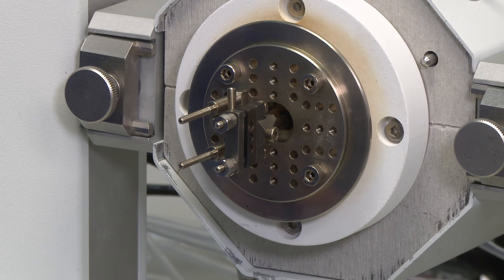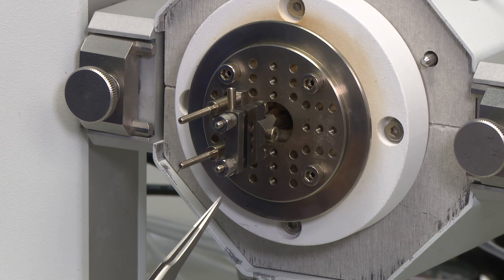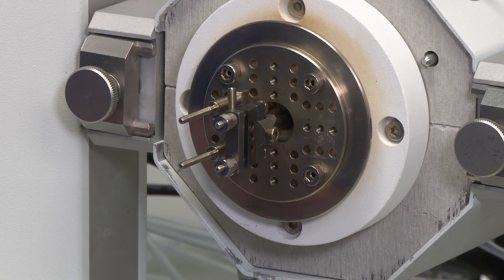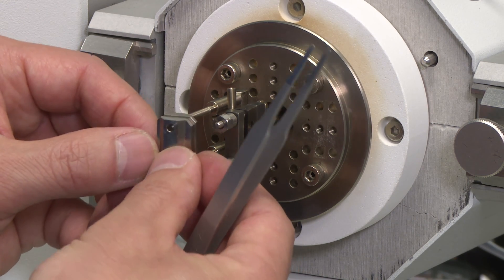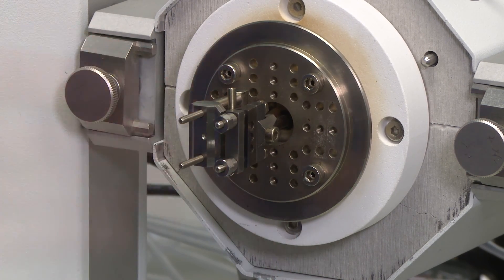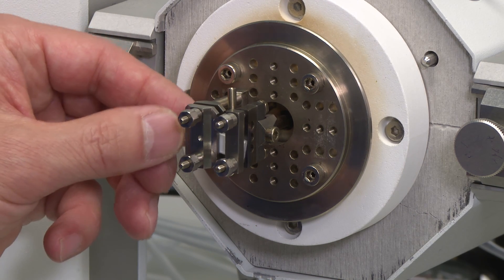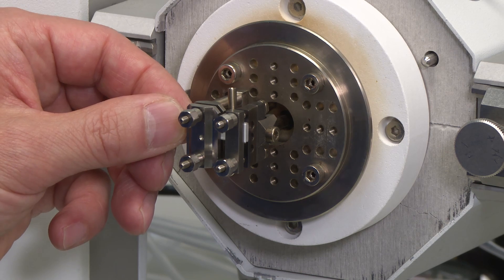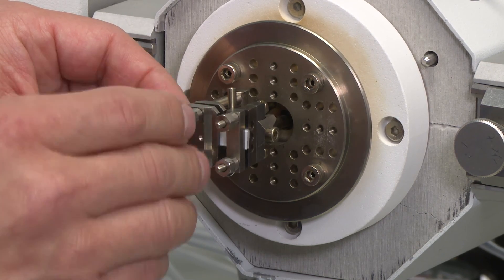For very short samples, you can move the fixed pillar closer to the drive shaft and also use these extenders to run very short samples. Now you can run very short samples with minimum length of 1mm free length.